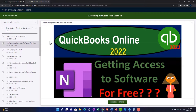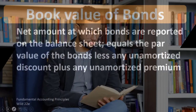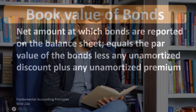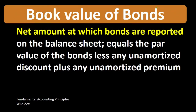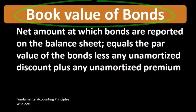Once again, click the link below for a free month membership to our website and all the content on it. According to Fundamental Accounting Principles, Wild 22nd edition, the definition of book value of bonds is: the net amount at which bonds are reported on the balance sheet, equals par value of the bonds less any unamortized discount, plus any unamortized premium.